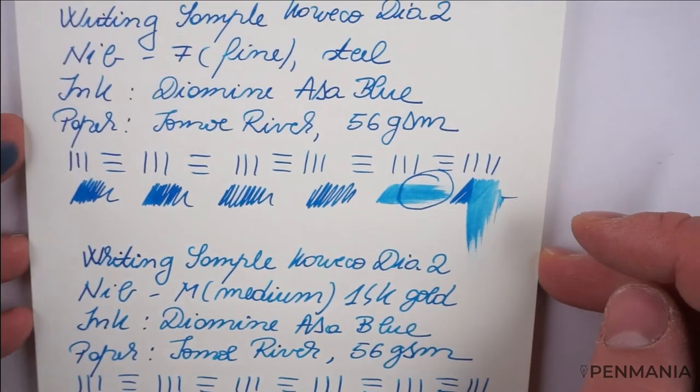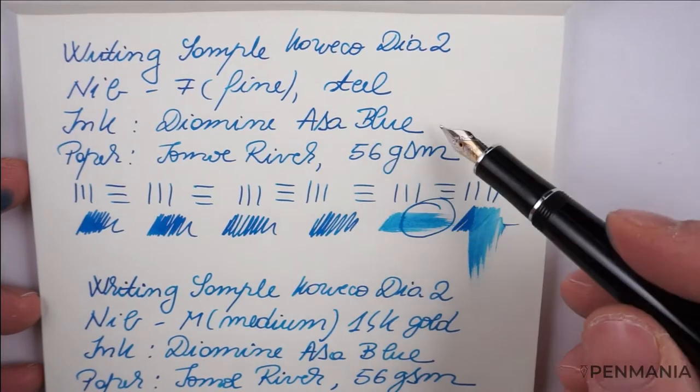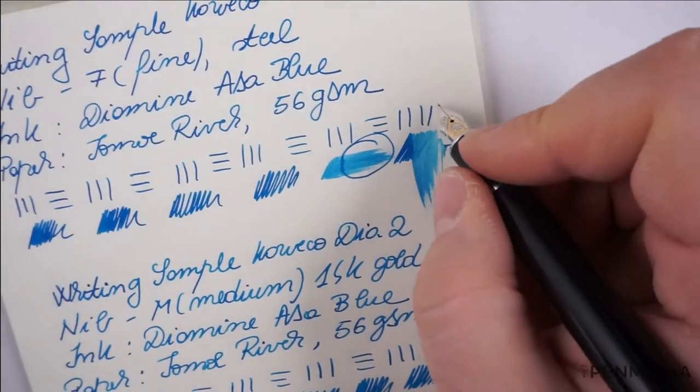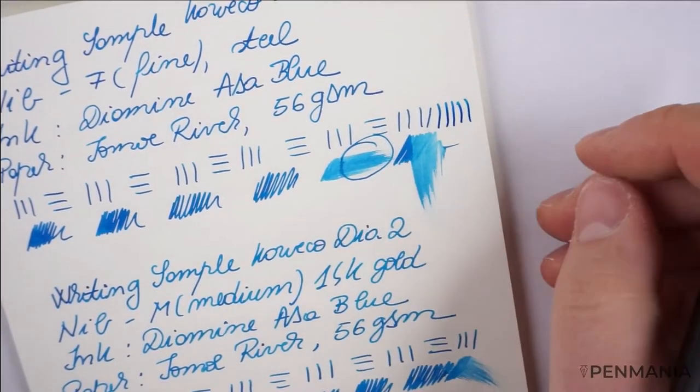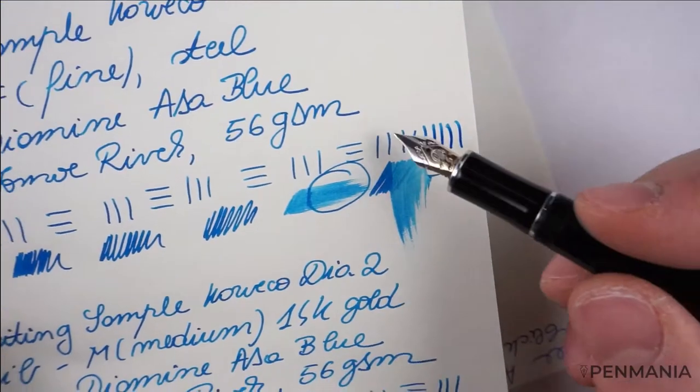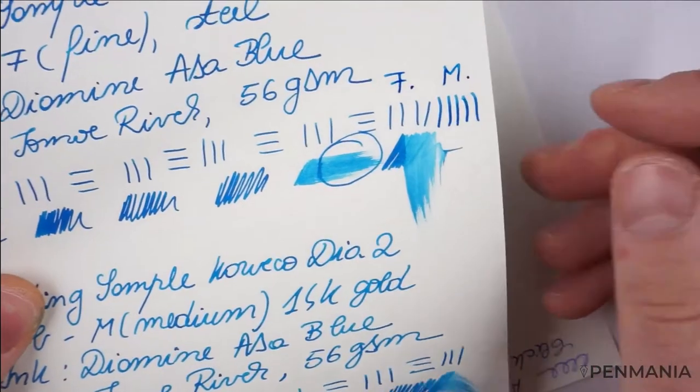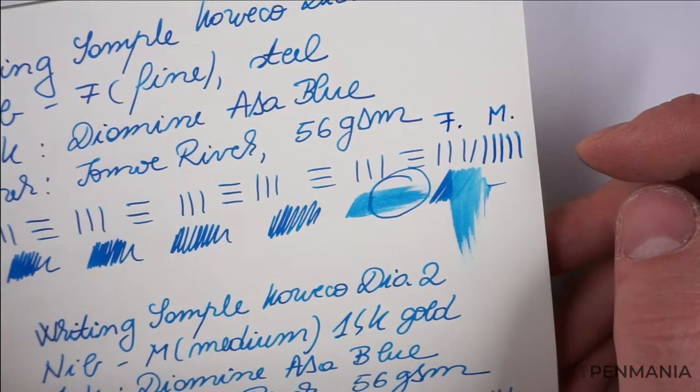Let's compare. This is the fine writing sample, the fine steel nib. This is the medium gold nib. As with the Clairefontaine, let's do some lines here. We have again a difference. This is the fine, and this is the medium.